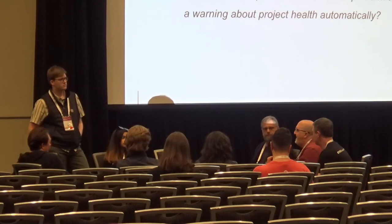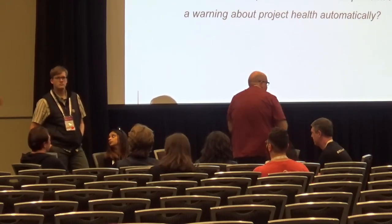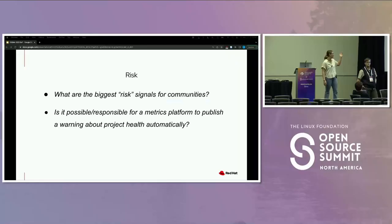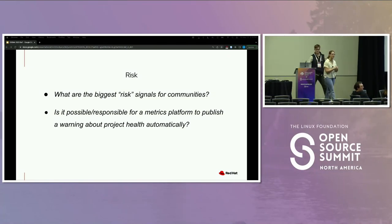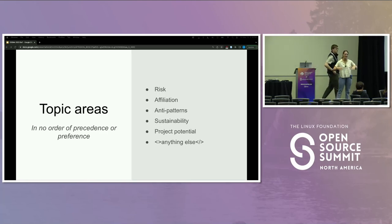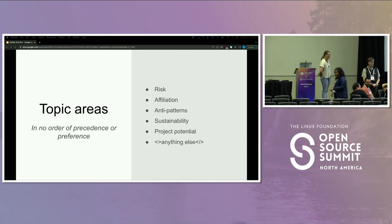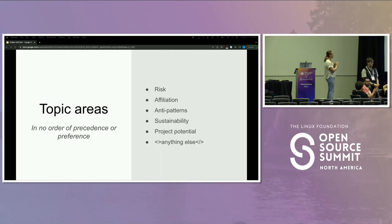We did a very basic introduction of the specific work that we do, and this BoF is literally just to talk about different topics and see what people think. We have about six different groups of questions. We can talk about risk — which we've been discussing — affiliation, sustainability, anti-patterns, and project potential. People can continue on risk or we can move to the next topics. We're going to get a timer going to keep conversation flowing.